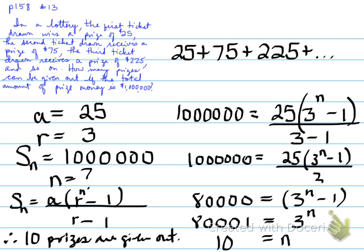Well, here is the solution. Looking at the solution, there it is. Turns out that it can give away about 10 prizes total, because the sum of the first 10 prizes will equal just about a million dollars. Alright, use logarithms to solve for that. Log of 80,001 divided by log of 3, and that will give you your n value.